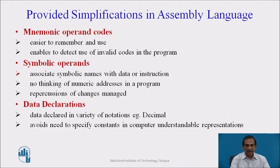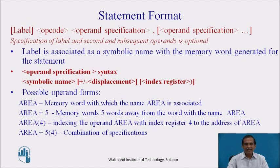In the data declarations involved in assembly programming, data is declared in a variety of notations — for example, it might be a decimal notation — and it avoids the need to specify constants in computer-understandable representations. The statement format involves a label, opcode, and operand specification, where the specification of the label and subsequent operands is optional.